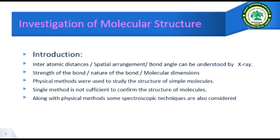How can the molecular structure be investigated? There are some simple physical methods used to study the structure of simple molecules, while for complex molecules advanced techniques are used. A single method is not sufficient to confirm the structure, and that's why more than two methods are used. Along with physical methods, advanced spectroscopic techniques are also considered, as we discuss in this chapter.